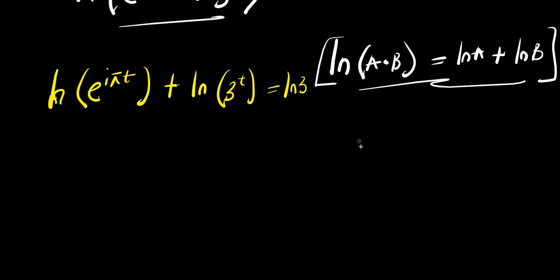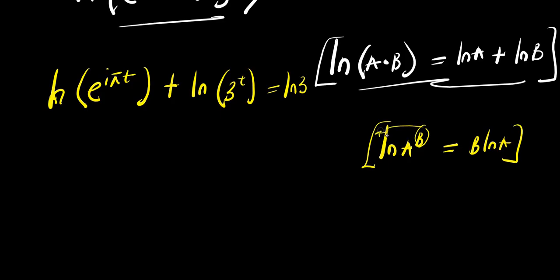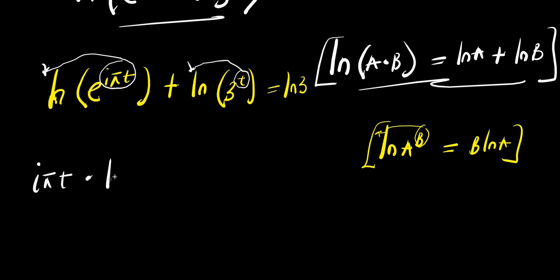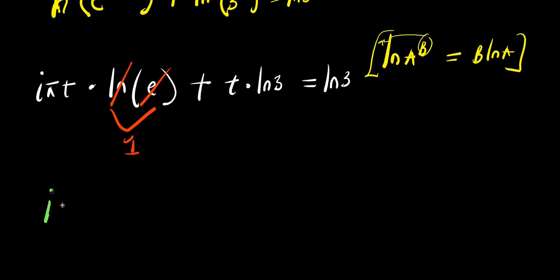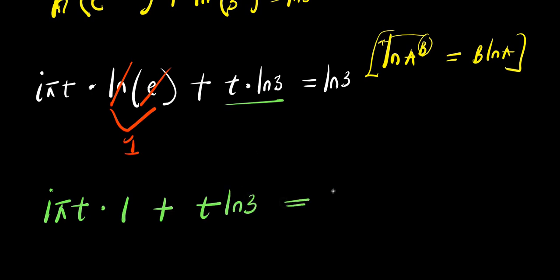There is also another logarithm property: natural log of a^b equals b times natural log of a. So the exponents come in front. That means i·π·t comes in front of natural log, and t also comes in front. So we have i·π·t times natural log of e, plus t times natural log of 3, equals natural log of 3. Now natural log of e equals 1, so we simply have i·π·t times 1, plus t·ln 3, equals ln 3.